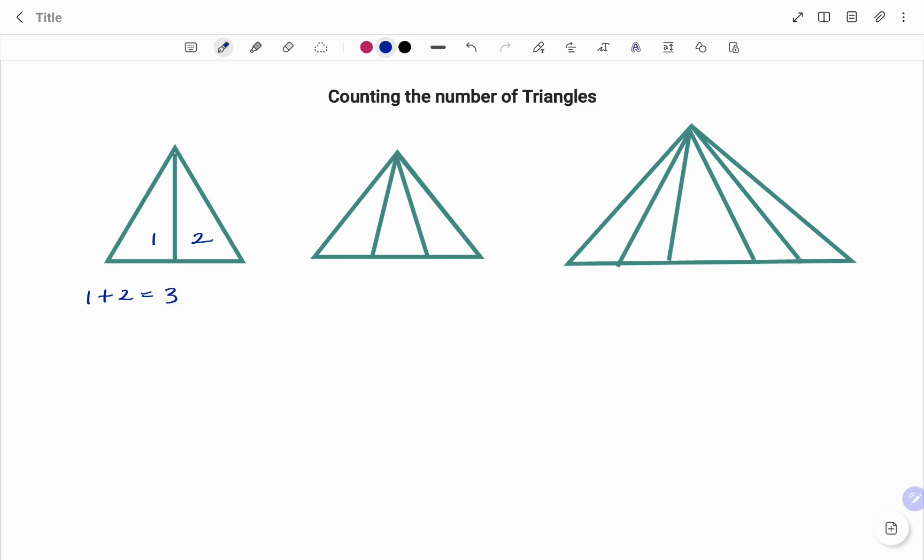In the second example, or in the second diagram, we have the shape given. We'll start by labeling each of the triangles. Therefore, to find the total number of triangles, we have 1 plus 2 plus 3, and that will give us 6 triangles.